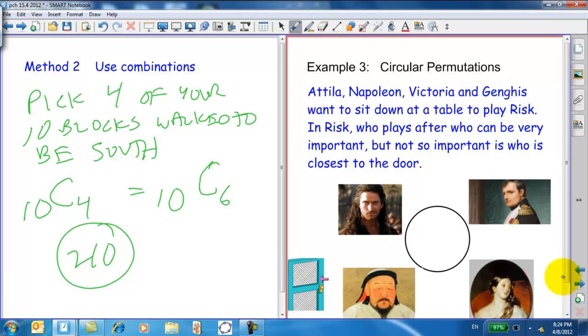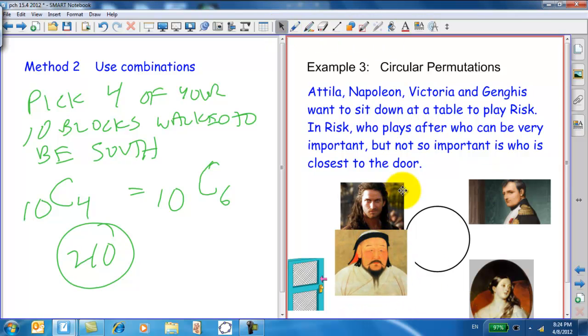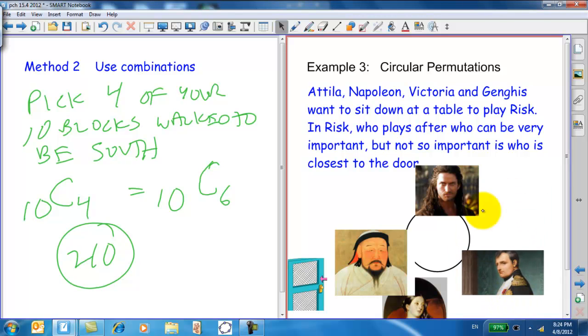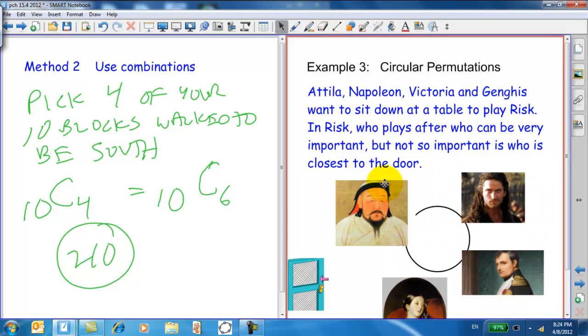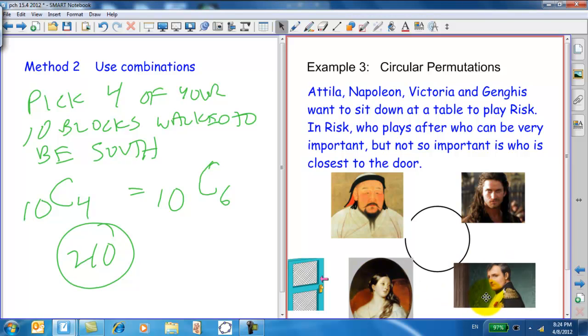Here's circular permutations. Attila, Napoleon, Victoria, and Genghis want to sit down at a table to play risk. And risk, who plays after who can be very important, but not so important who is closer to the door. So, that is, when they sit down at a circular table, their main concern is who's going before them and who's going after them. If I were to rotate all these individuals like this, it's really the same game, isn't it, in terms of who's going before who. Now, they're still going to roll to see who starts and so forth, and that's another story. But in terms of sitting at the table, this is what's important to them.